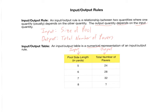There's another important reason to look at input-output tables. What if there was a pool of side length eight yards? We want to find the total number of pavers without drawing it out. You might notice that as the side length goes up by one yard, the number of pavers goes up by four. Since eight is one more than seven, the answer should be four more than 32 — and indeed, there are 36 tiles needed. However, this pattern-based approach is pretty limiting, as you'll see next.